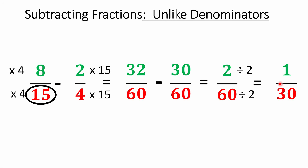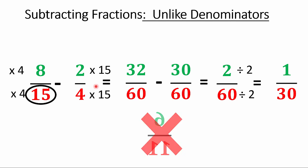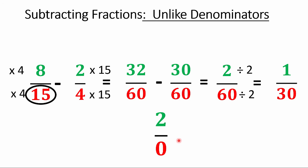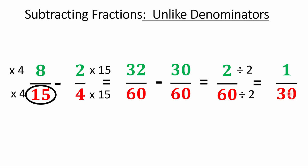I just want to show you the two common errors again. One is writing six-elevenths — people subtract the numerators and denominators directly, which makes me sad. The other mistake is getting this far and then subtracting both, ending up with zero as a denominator — can't have zero as a denominator. The only correct answer is one-thirtieth. Thanks for watching, guys.